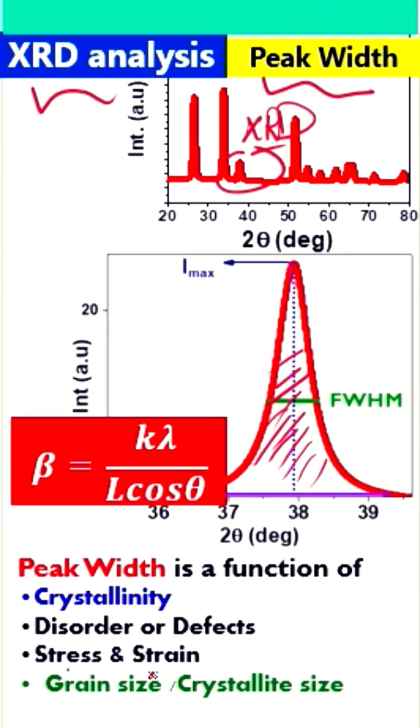The third is the stress and strains. We know that materials have stresses or strains. This is basically called residual stresses or strain. Residual means internal. So because of that, we have the peak width here.